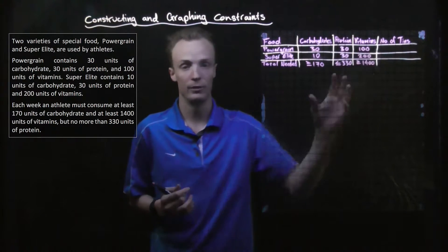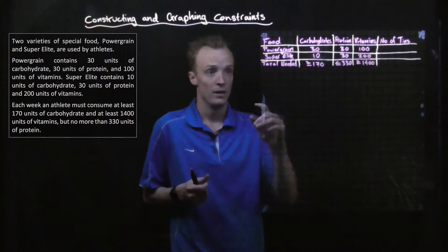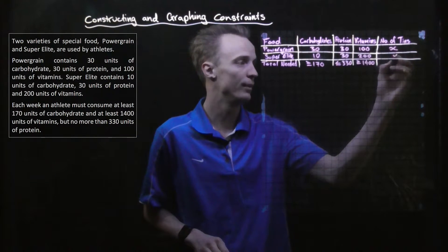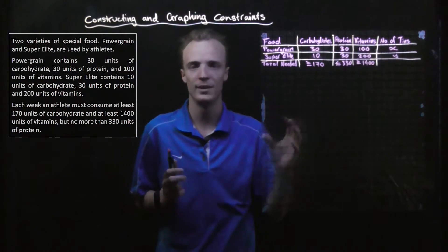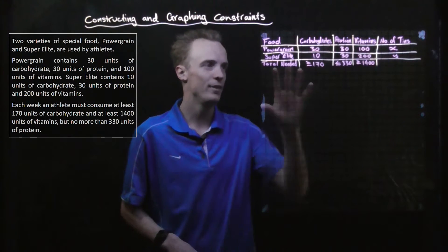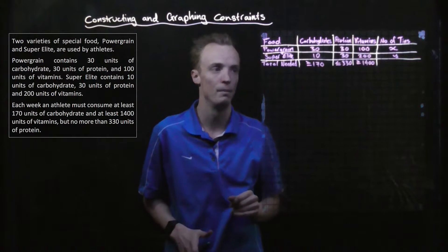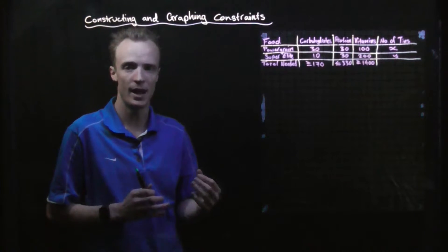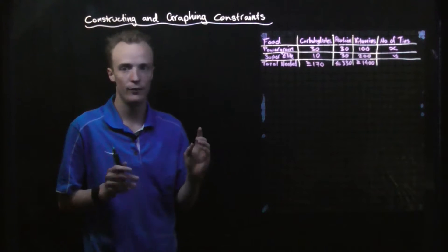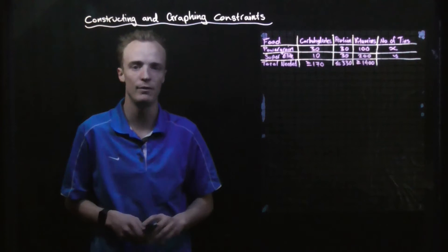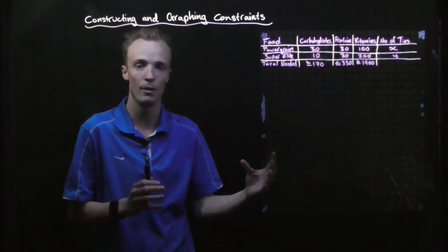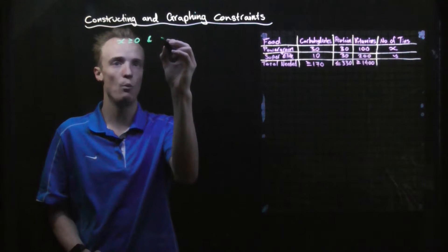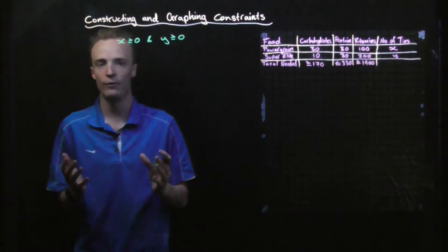Finally, we look at the number of tins. We need to find our variables. For Power Grain I'm going to use the variable X to represent the number of tins, and for Super Elite I'm going to use the variable Y to represent the number of tins. Defining our variables is a very important step. Now the first constraint is that you can't have a negative number of tins — you can have 0 or greater than 0. So X ≥ 0 and Y ≥ 0. That is our first set of constraints.